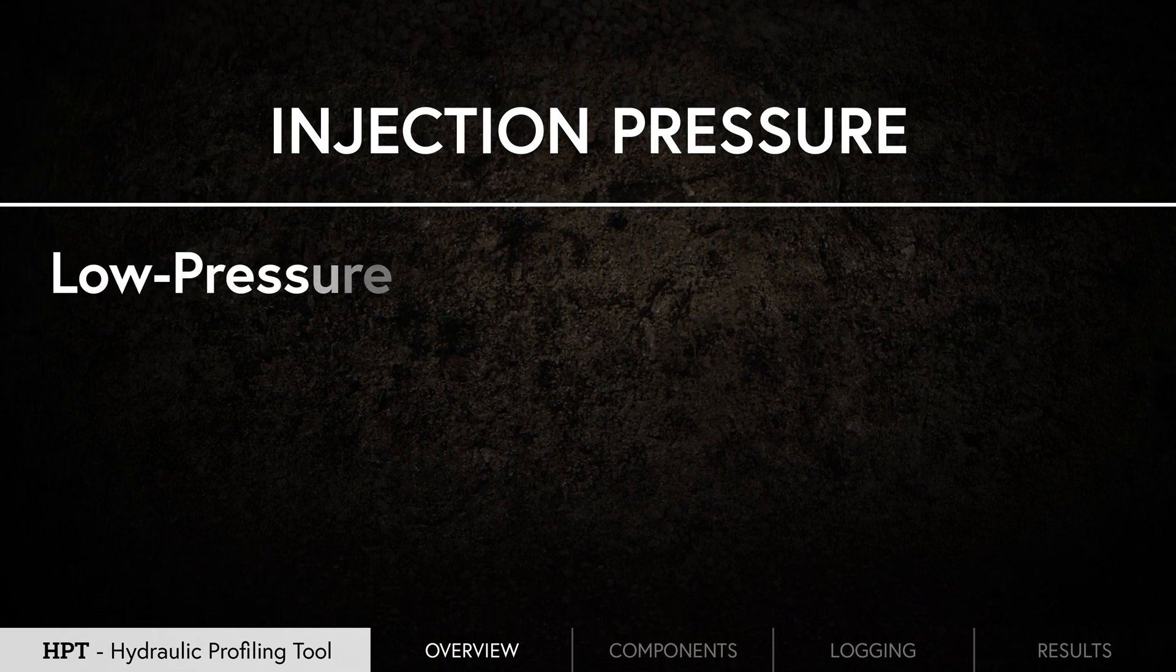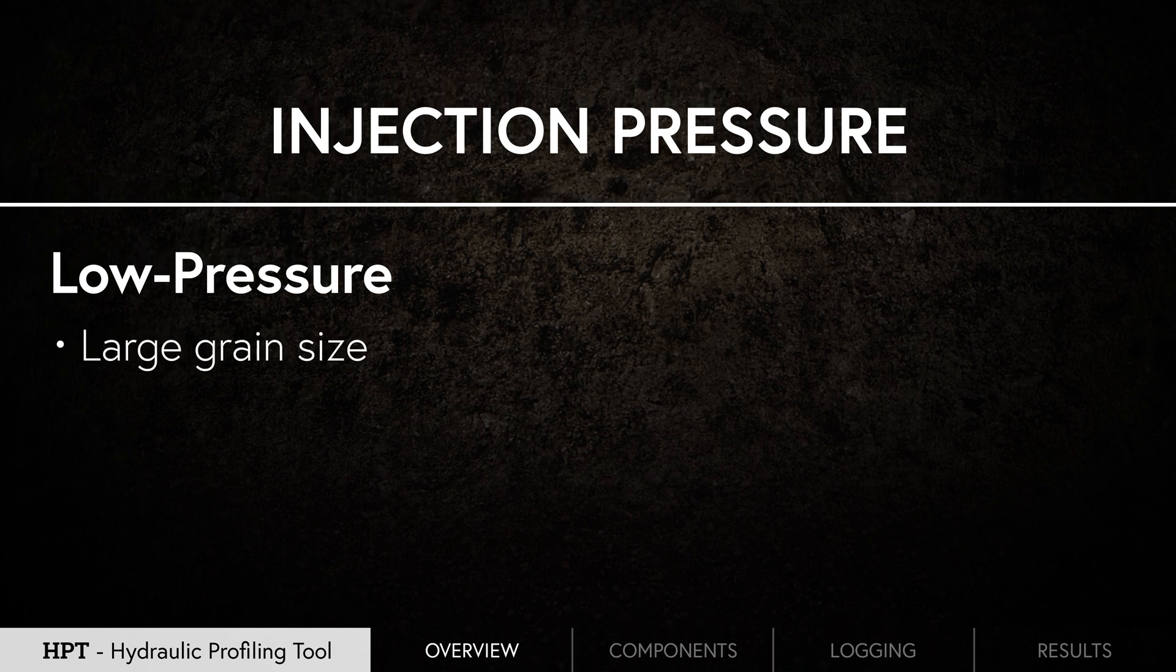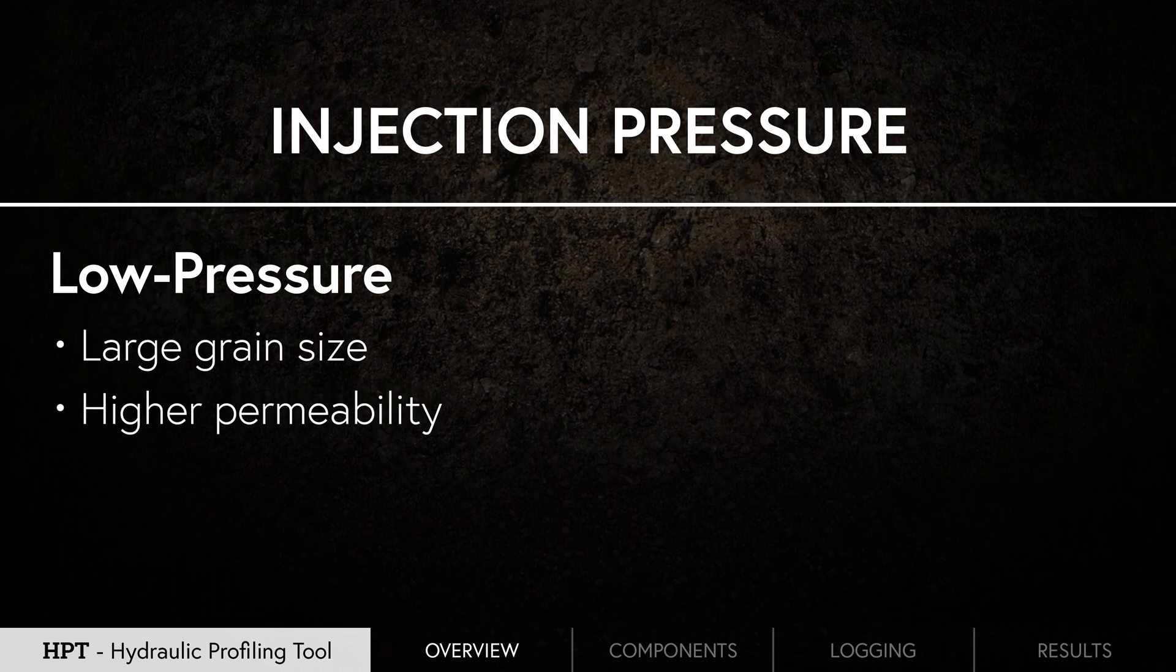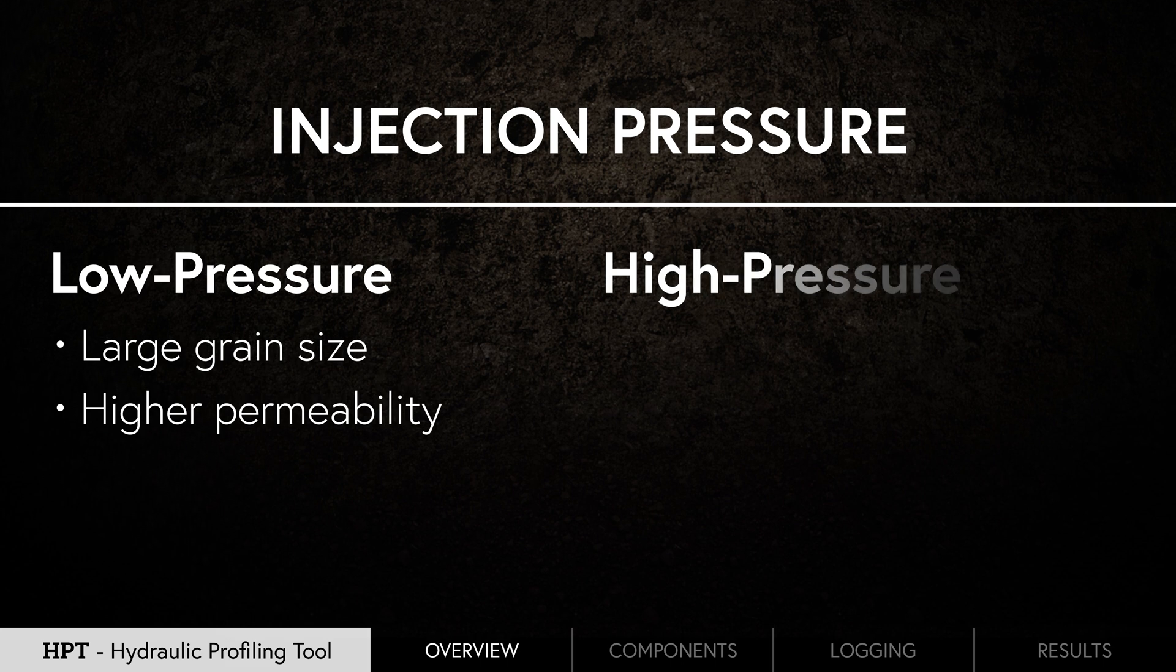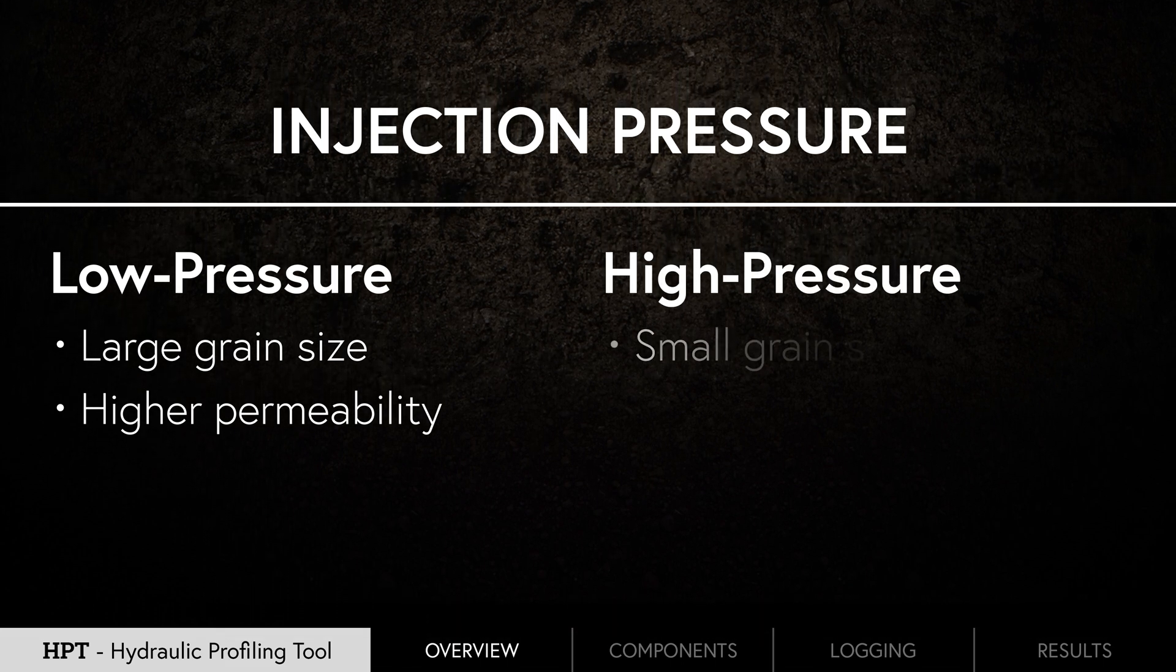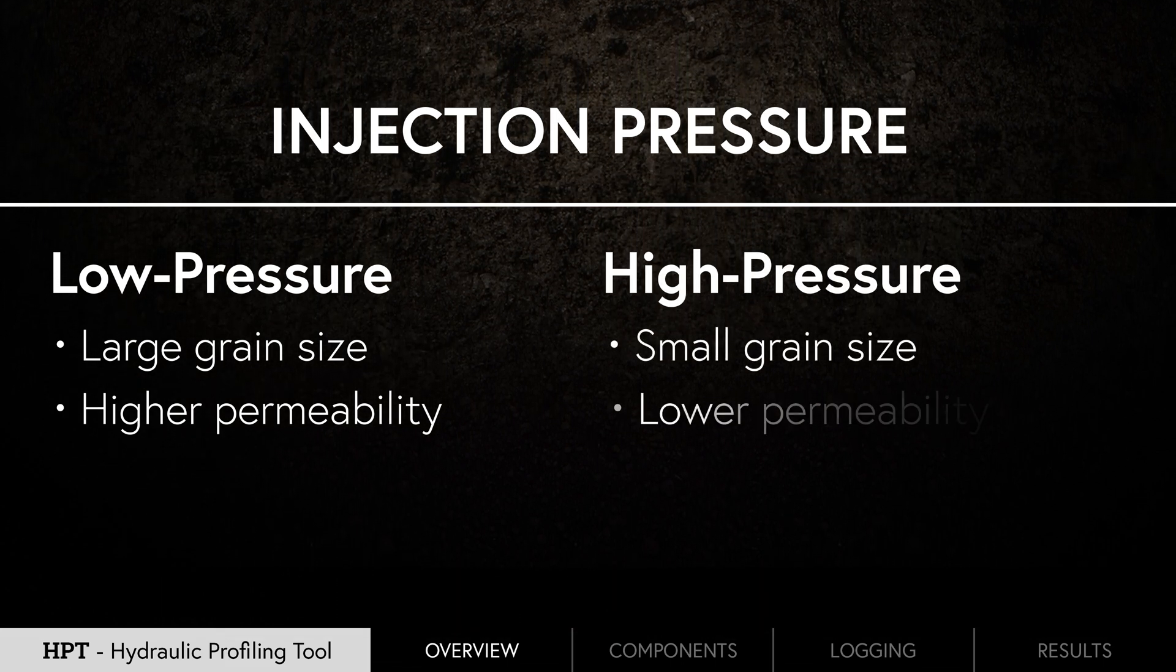A low pressure response would indicate a relatively large grain size and higher permeability. Conversely, a high HPT pressure response would indicate a relatively small grain size and lower soil permeability.